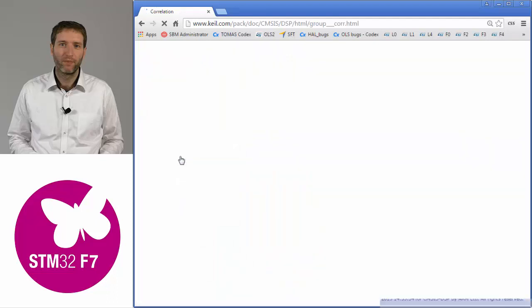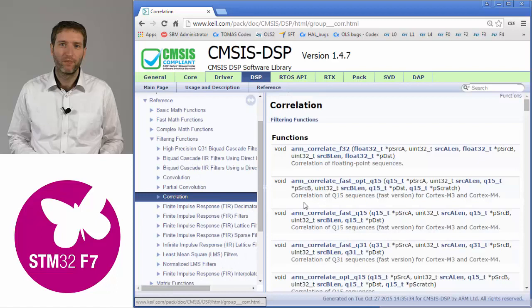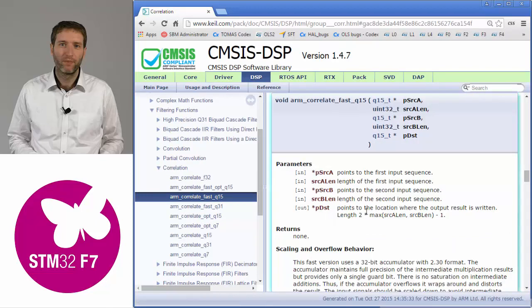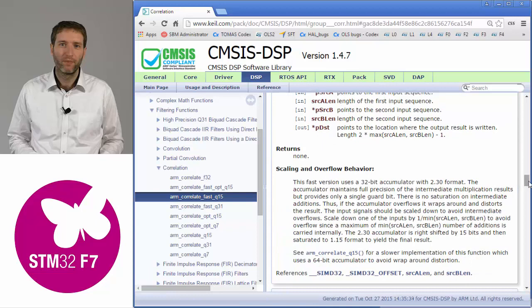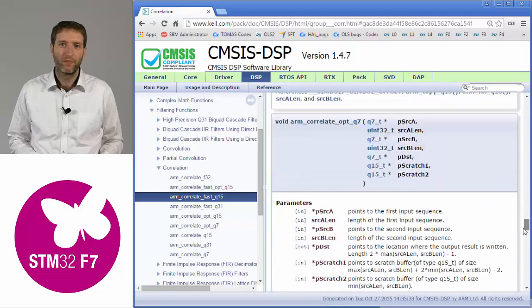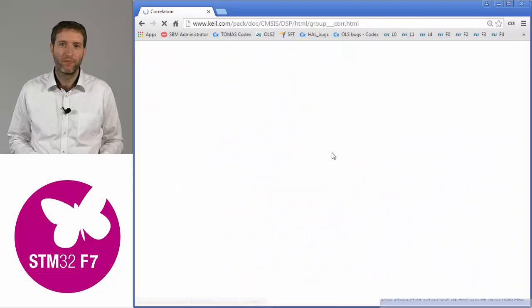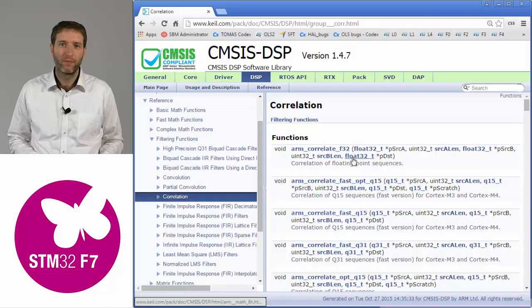If you look for the documentation, there's already a reference online and also offline. It is quite well described in the comments. You get all the description of what it does. For all the functions, you see that the suffix is showing the number format you're targeting. All the functions exist with variants underscore Q8, Q15, Q31, and float32. So the cross correlation function is very easy to use—you just put arguments of the inputs and you get the output.